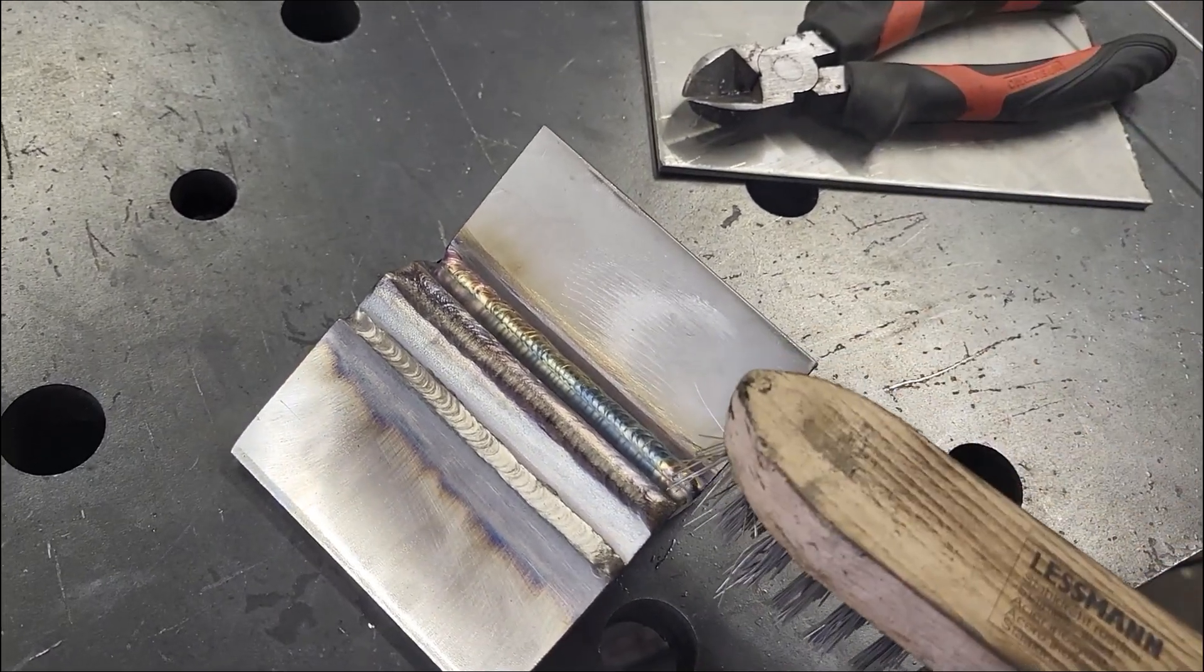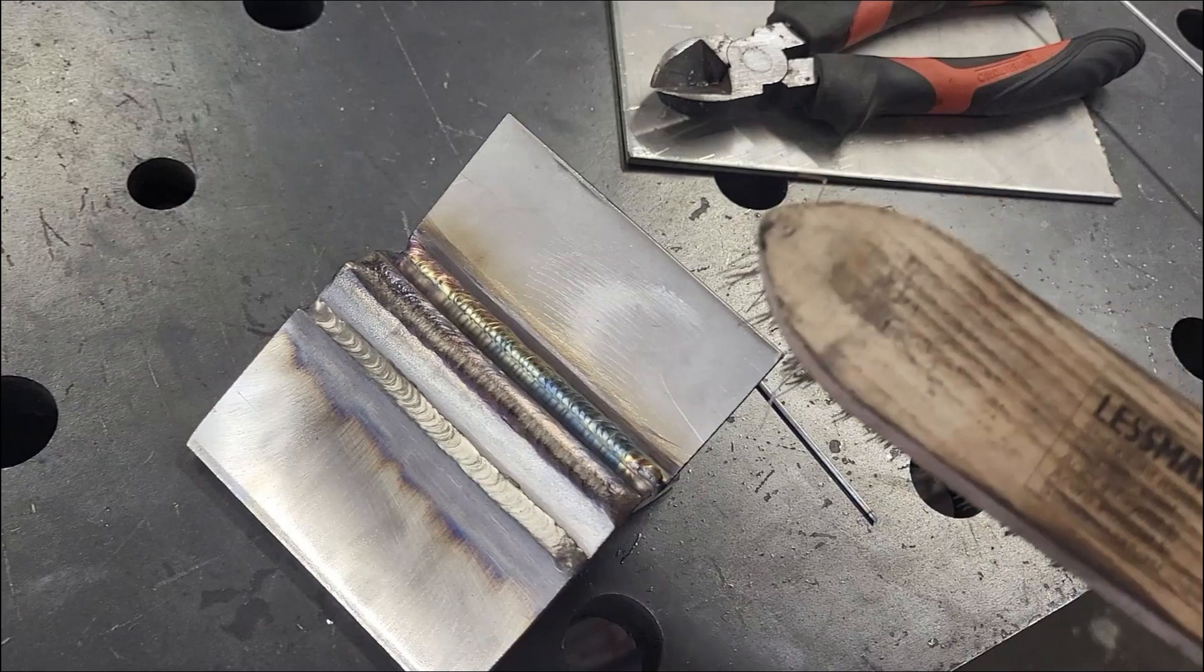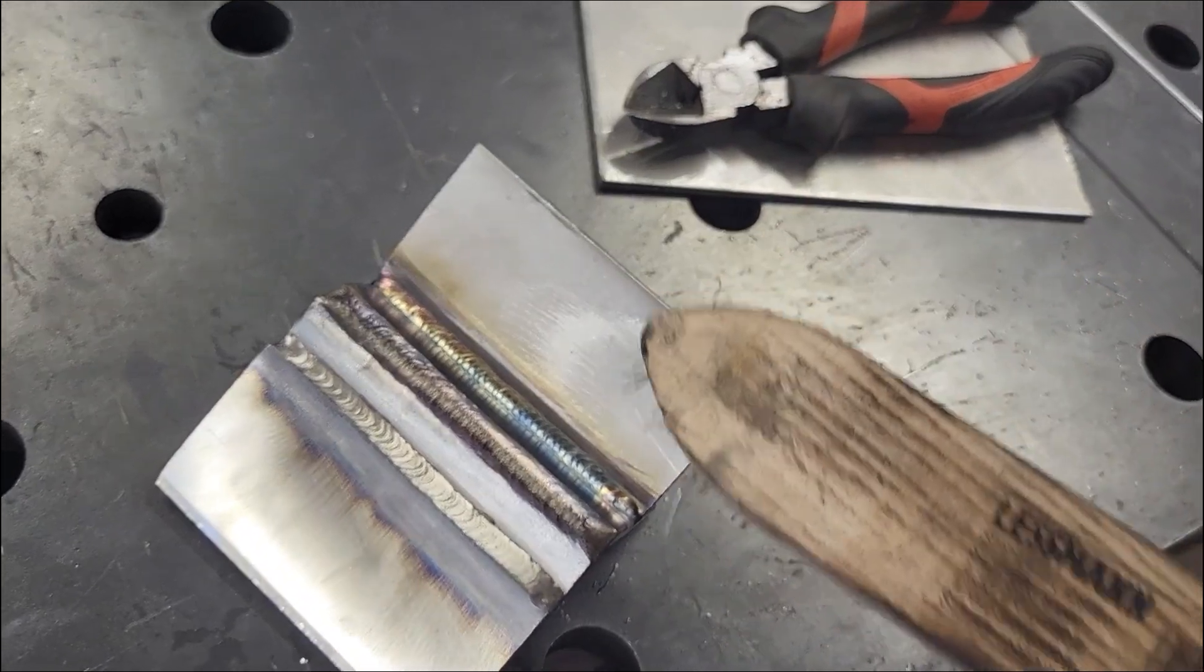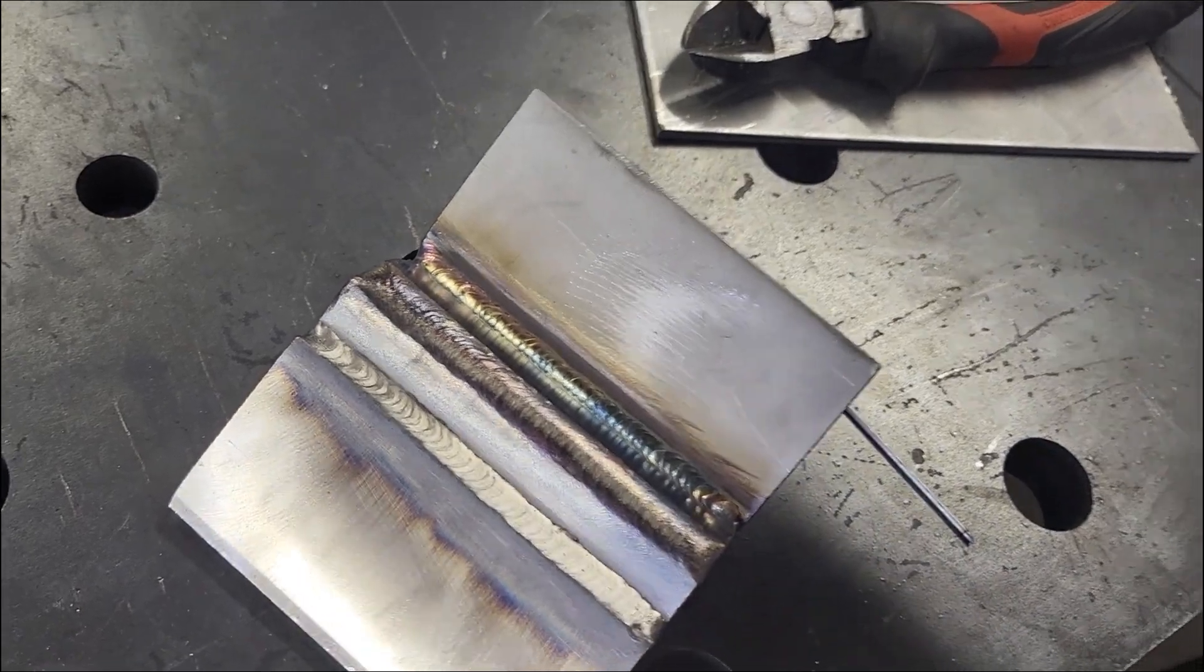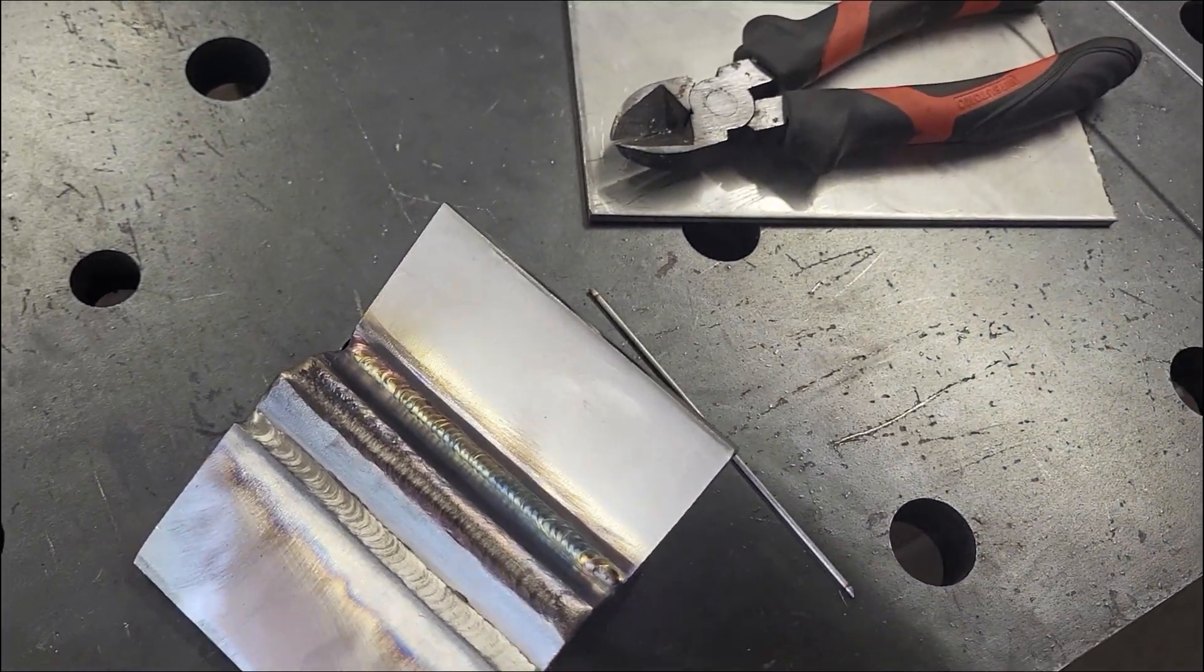That was the last weld. And for stainless steel, it's very important to take off the color, because it's actually an oxide. Even though it's pretty colors like blue and yellow, it still has the tendency to start corroding after some time.